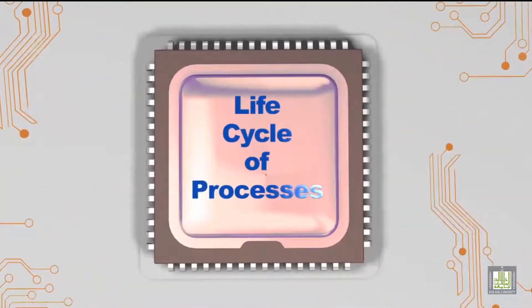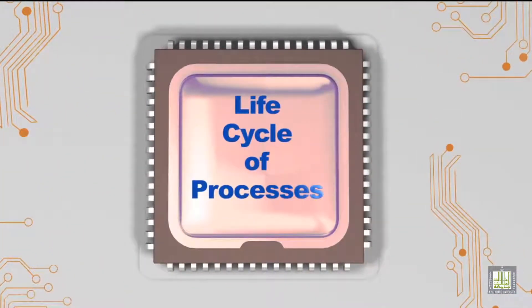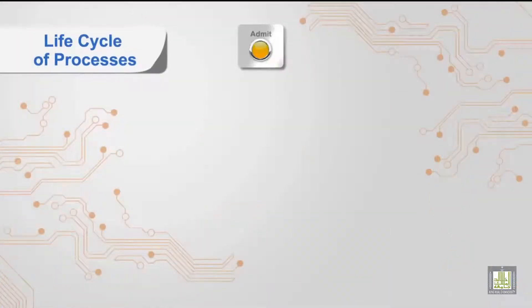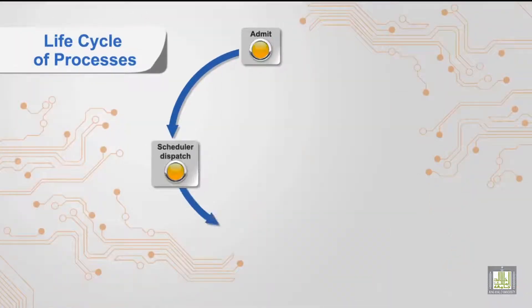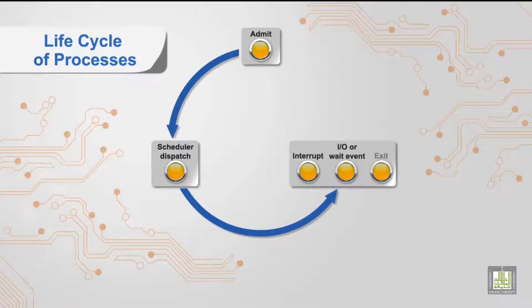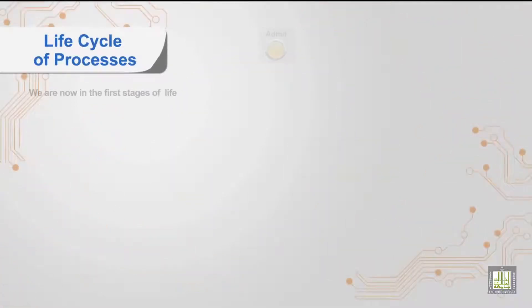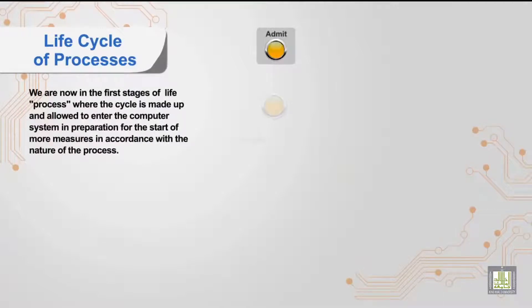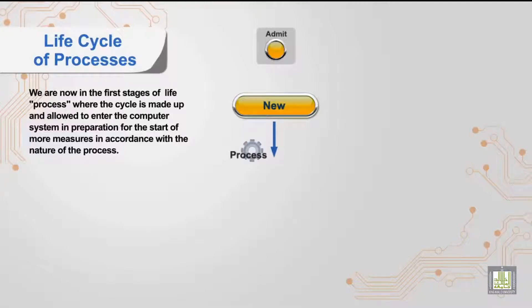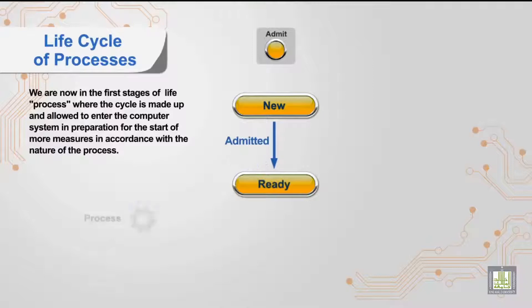Life Cycle of Processes. We are now in the first stages of a life process, where the cycle is made up and allowed to enter the computer system in preparation for the start of more measures in accordance with the nature of the process.